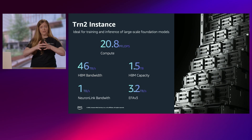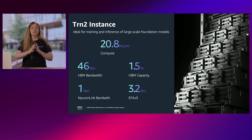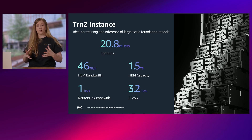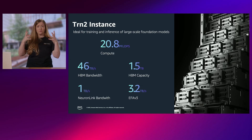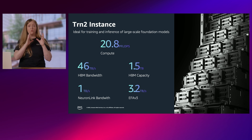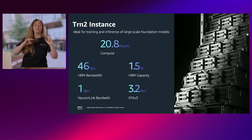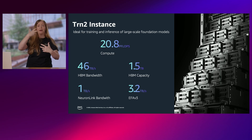Now we package 16 of those chips into one instance. The Trainium 2 instance has 16 chips in total, giving you 46 terabytes per second of total HBM bandwidth and 1.5 terabytes of HBM capacity. You can move data between chips chip-to-chip through the Neuron Link at 1 terabyte per second of bandwidth. EFA allows you to move data across instances at 3.2 terabytes per second. The total compute available on the Trainium 2 instance is 20.8 petaflops.